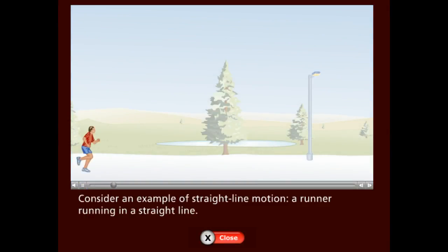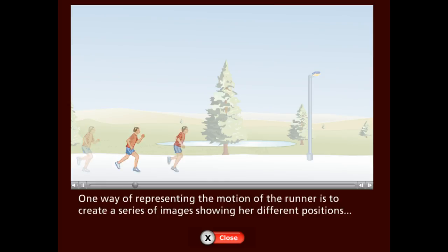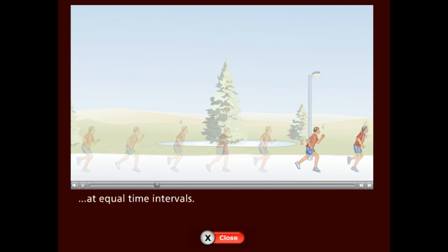Consider an example of straight-line motion: a runner running in a straight line. One way of representing the motion of the runner is to create a series of images showing her different positions at equal time intervals.